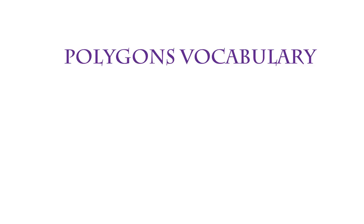We're going to do a little bit of polygons vocabulary. At this point, you already know the different names for all those different kinds of polygons — your nonagons, your heptagons, your dodecagons — and you know a little bit about what convex and concave mean. You know the difference between a regular polygon and one that's not regular. But there are a few other terms we want to make sure you know because they'll be very important in the formulas in this unit. There are five terms I want you to know by the end of this.